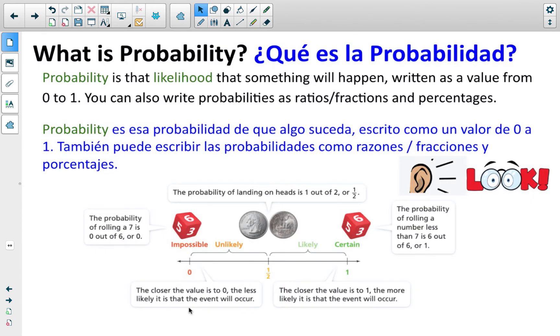Just a reminder of what probability is, we have this probability scale, and it's the likelihood of something happening, ranging from 0 to 1, where the greater the number, the higher likelihood that event is of happening. Keep in mind, you can write the probabilities as ratios or fractions or percentages.